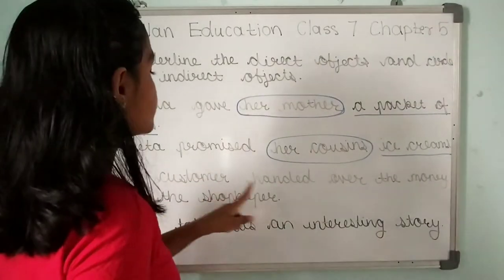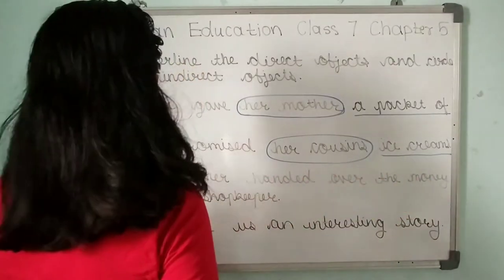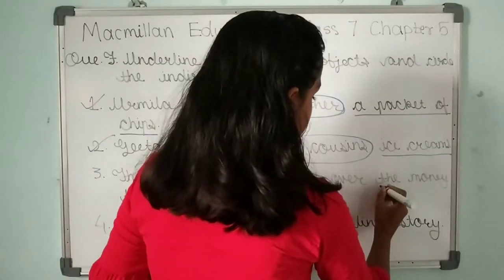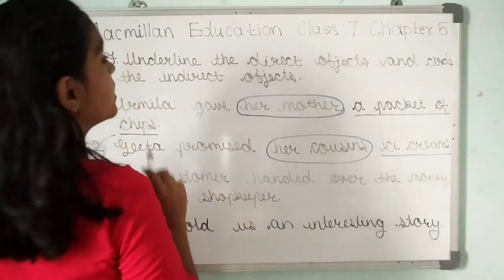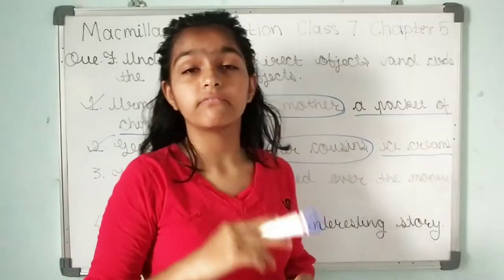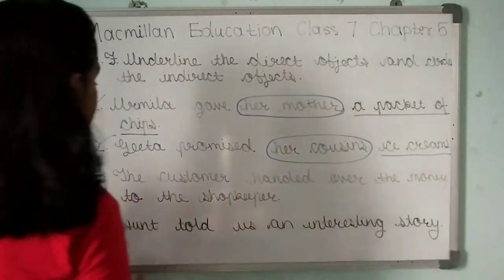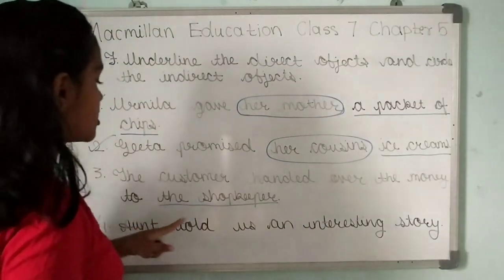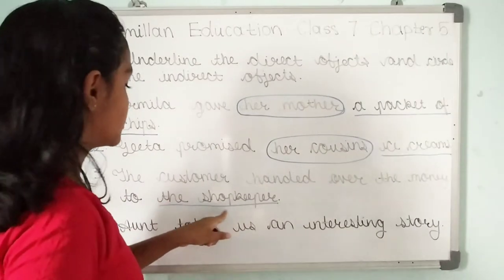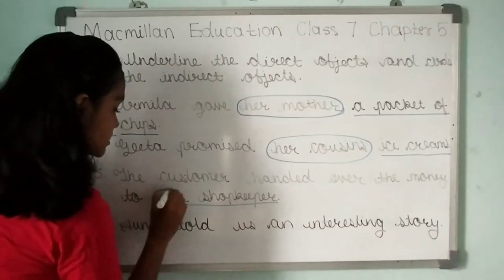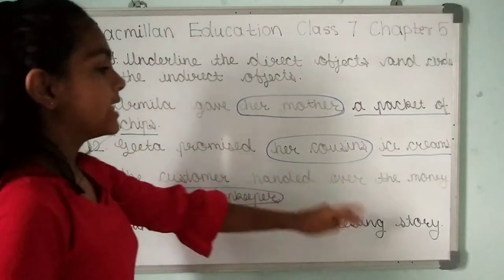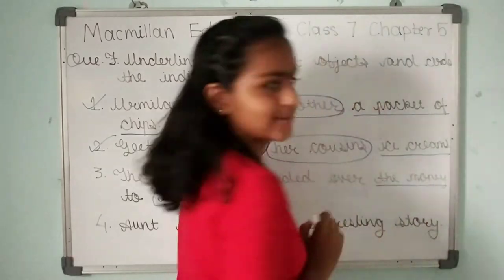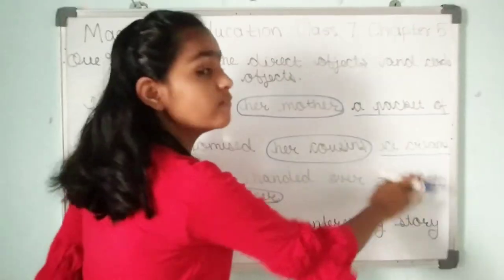Question three: 'The customer handed over the money to the shopkeeper.' Here, the money is being given to the shopkeeper, so 'the shopkeeper' is the indirect object. And 'the money' is the direct object — it is the name of something.